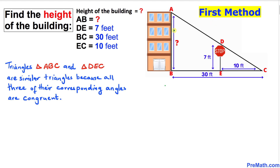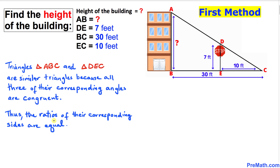We'll use the first method and focus on two triangles: triangle ABC, the big triangle, and triangle DEC. These two triangles are similar because all three corresponding angles are congruent. Angle B and angle E are both 90 degrees, and angle C is common to both triangles, making the remaining angles congruent as well.